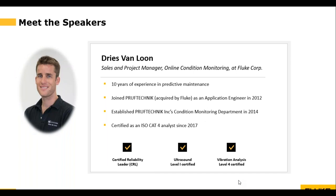Dries is a sales and product manager for online condition monitoring at Fluke Corporation with 10 years of experience in predictive maintenance. He joined Proof Technic — which was acquired by Fluke last year — when he was still in Belgium as an application engineer, and then he moved to the company's U.S. office in 2014 to set up a condition monitoring department. His group served all of the U.S. on condition monitoring activities such as proactive maintenance, remote temporary monitoring, troubleshooting, and torque measurements. He became a certified ISO Cat4 analyst in 2017.